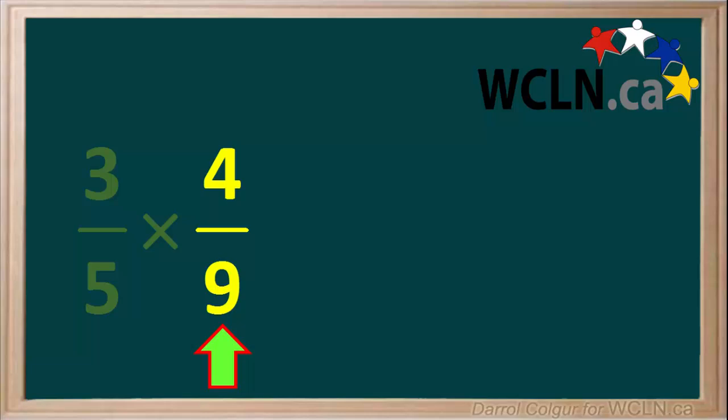But what about the diagonal numbers? One diagonal pair of numbers is the 4 and the 5. 4 and 5 cannot be divided by the same number other than 1, so nothing can be cancelled between those two.